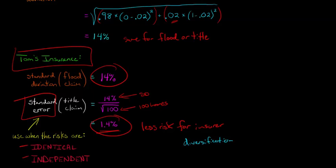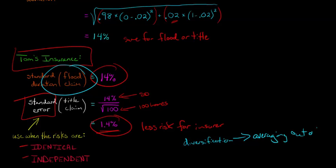Some years there might be a title claim and the insurance company loses some money, but 98 or 99 out of the other homes didn't have any problem. So the insurance company can predict: there'll be like one or two title claims every year. But with the flood, when it happens, all 100 homes get hit — it's all or nothing, so there is no averaging out. Basically, diversification is the averaging out of the independent risks over time.